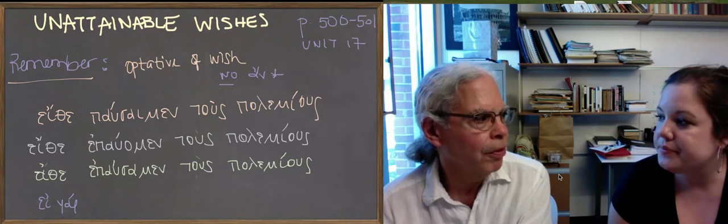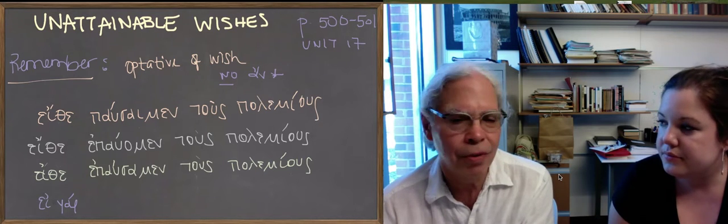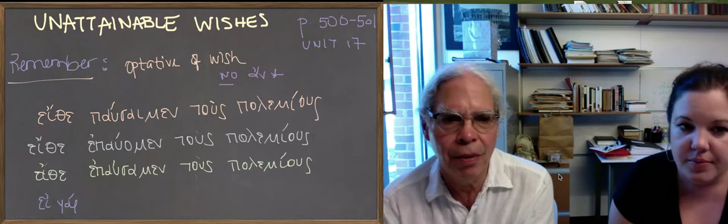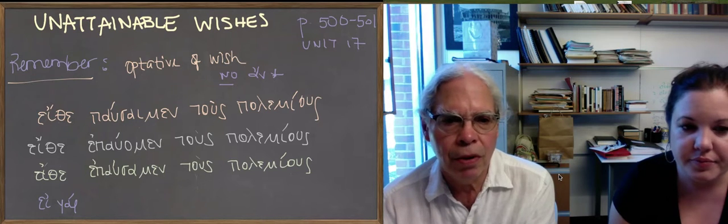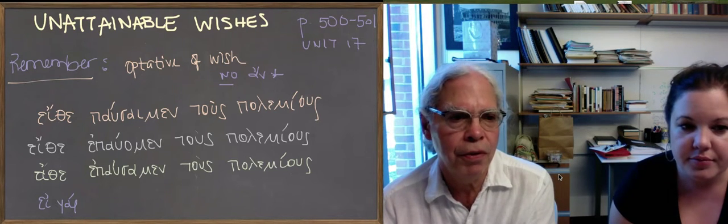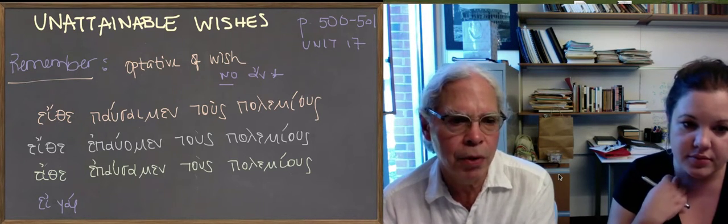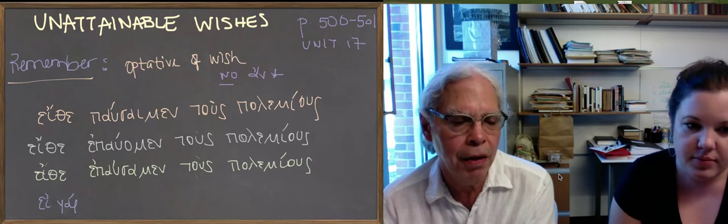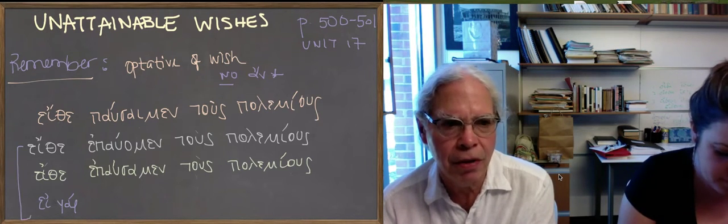When you do a wish on the optative, you're really pretty unsure that it's going to happen. The likelihood is dim. But you can push it farther if you use these particles, the wish particles aether or agar, with indicative past tense indicatives.